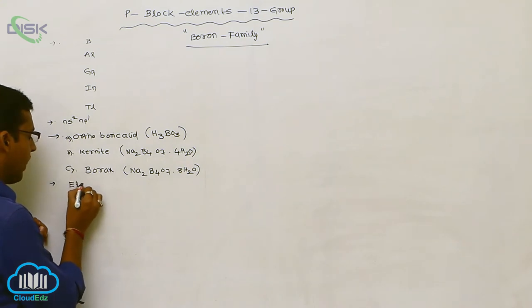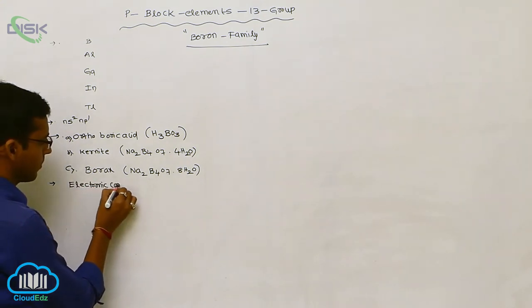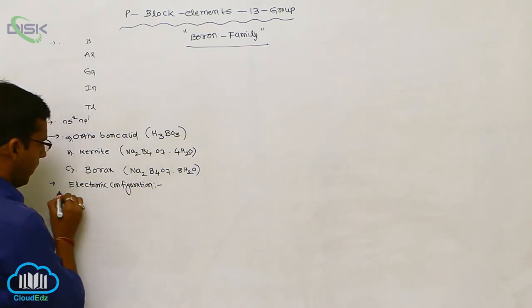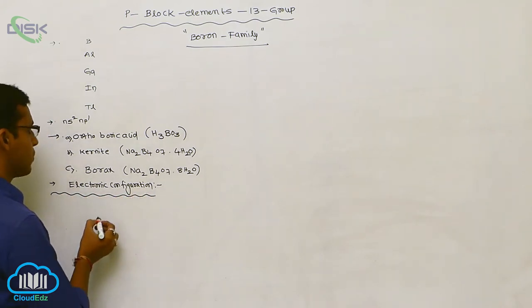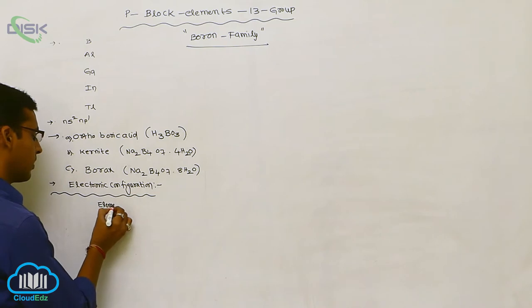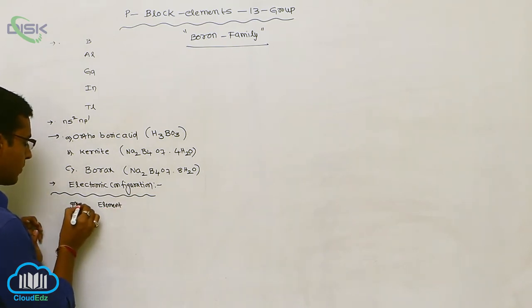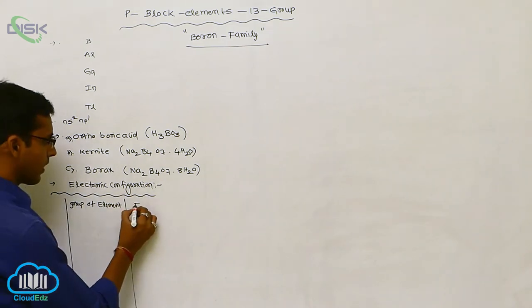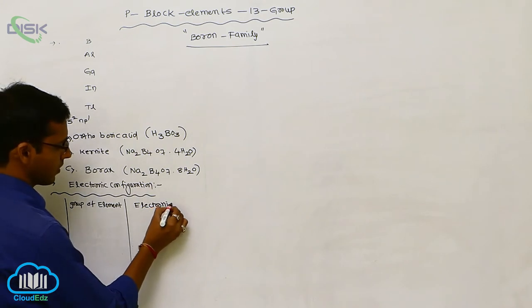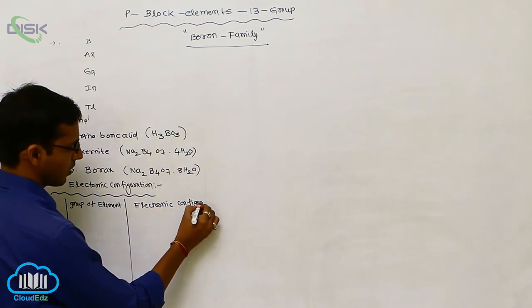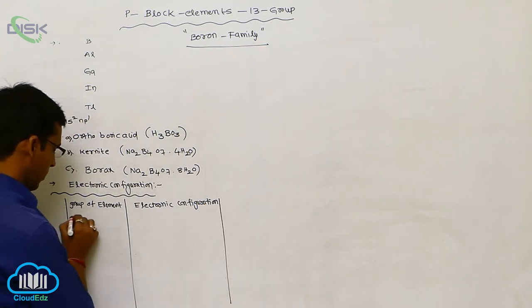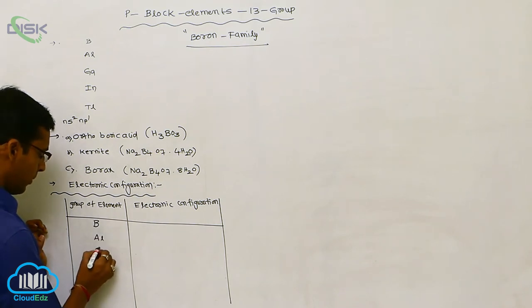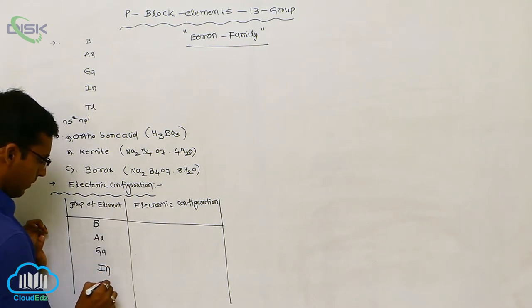In that first one, electronic configuration. Electronic configuration. So elements. Element means group of elements. And next one, electronic configuration. So what are the group elements? Boron, aluminum, gallium, indium, thallium.